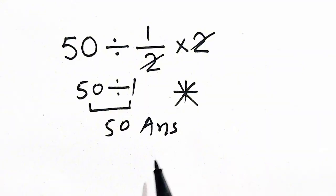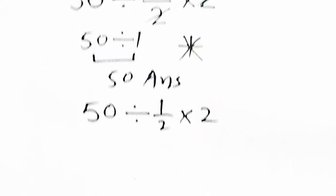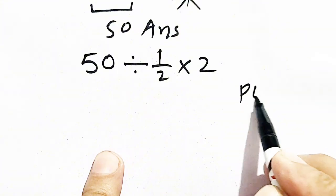Now I will solve this question again. 50 divided by half times 2 can be solved by following order of operation according to PEMDAS rule.